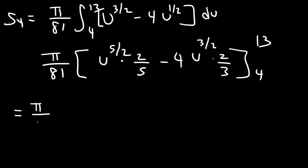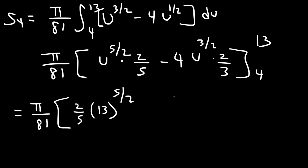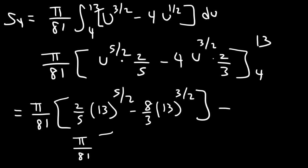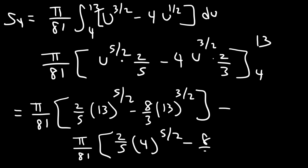So we're going to have π/81 times (2/5) times 13 raised to the 5/2, minus (8/3) times 13 raised to the 3/2, and then minus π/81 times (2/5) times 4 raised to the 5/2, minus (8/3) times 4 raised to the 3/2.